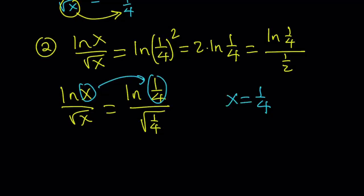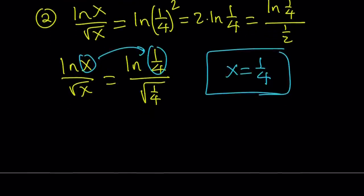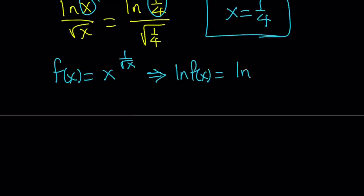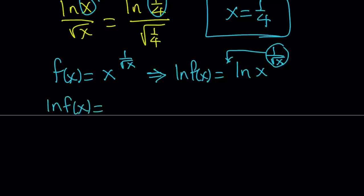The next question is whether that is the only solution. We know x equals 1/4 works, so let's explore further. I'm going to define f(x) as x to the power 1 over square root of x, and I want to differentiate this using a bit of calculus. Taking ln of both sides helps because it brings the variable exponent down: ln f(x) equals 1 over square root of x times ln x, which can be written as ln x over square root of x.